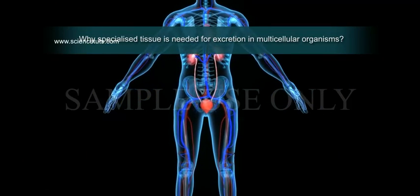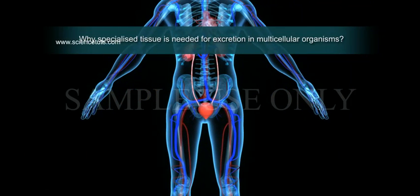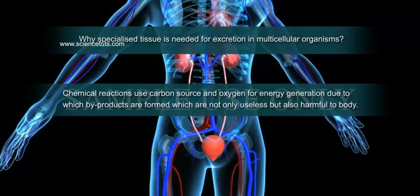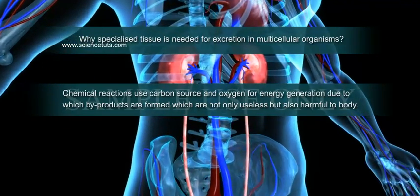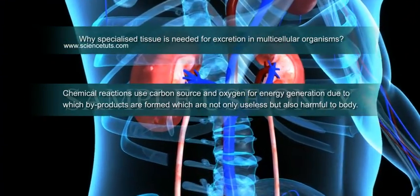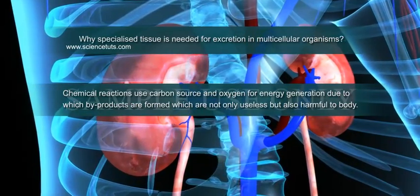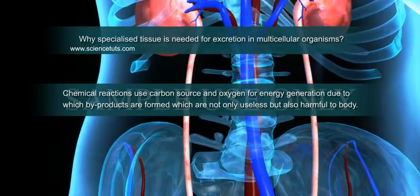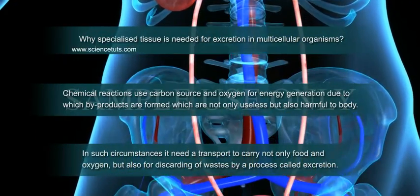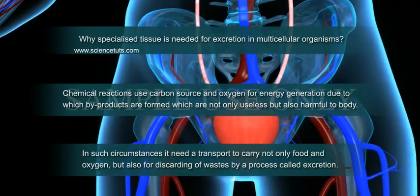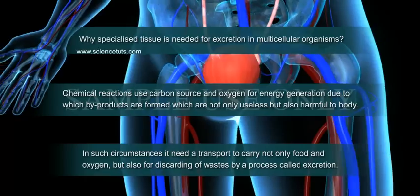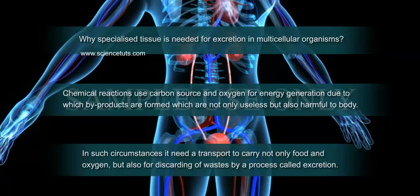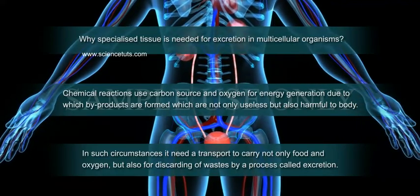Why is specialized tissue needed for excretion in multicellular organisms? Chemical reactions use carbon source and oxygen for energy generation, due to which by-products are formed that are not only useless but also harmful to the body. In such circumstances, a transport system is needed to carry not only food and oxygen, but also for discarding wastes by a process called excretion.